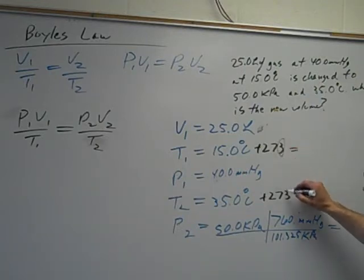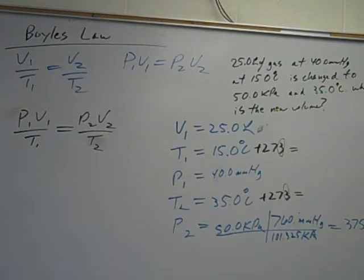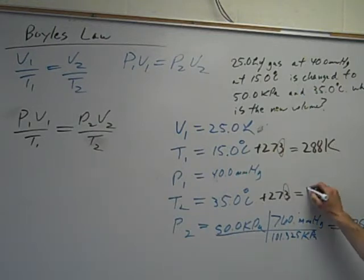Temperature. Temperature must be in Kelvin. That's the only place generally where you have no choice. You must add 273. If you want to be a stickler for accuracy and use 273.15, you go for it. So T1 comes 288. 35 plus 273 is 308.